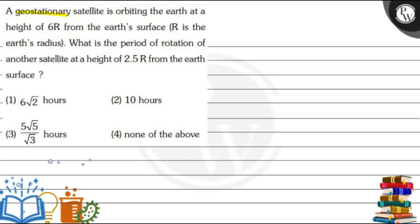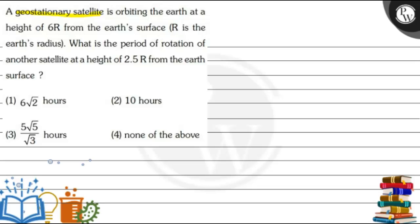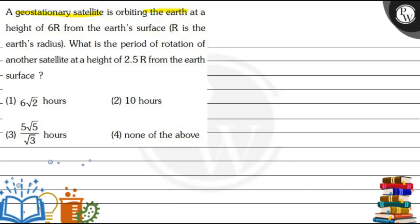A geostationary satellite is orbiting the Earth at a height of 6R from the Earth's surface. What is the period of rotation of another satellite at a height of 2.5R from the Earth's surface? Let's see the key concept of this question.